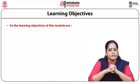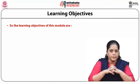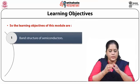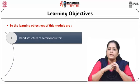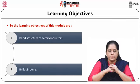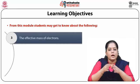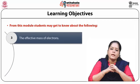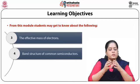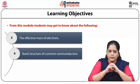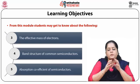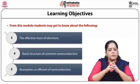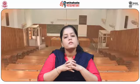The learning objectives of this module are: first, we will be discussing about the band structure of semiconductors; secondly, the Brillouin zones; thirdly, the effective mass of electrons; next, we will discuss about the band structure of common semiconductors; and lastly, the absorption coefficient of semiconductors will be discussed. So let us start with a basic introduction about the module.